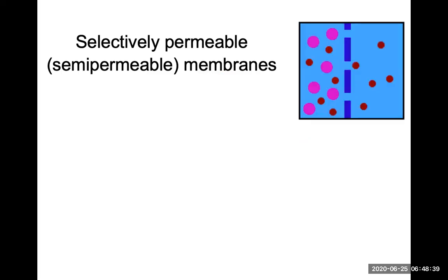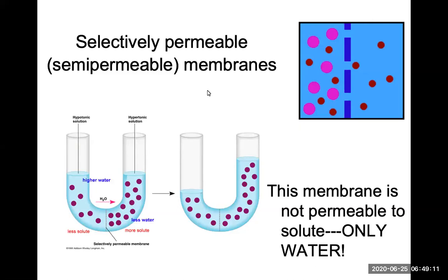A selectively permeable membrane is involved in osmosis. Selectively permeable means not everything can get through the membrane. In the diagram, the membrane is shown as blue rectangles — it's selectively permeable because not every molecule can fit through. The red molecules are able to squeeze through the spaces, but the pink circles are too big. So this membrane is selectively permeable only to the red circles.